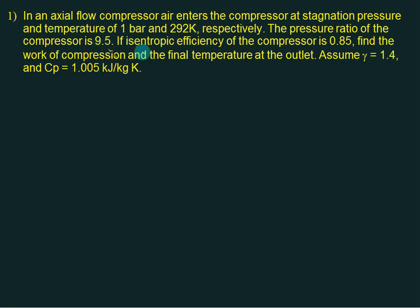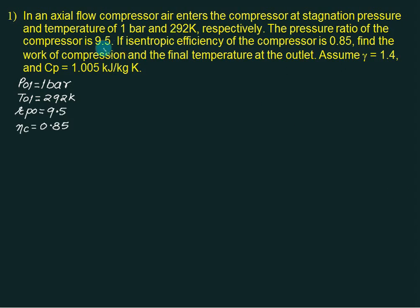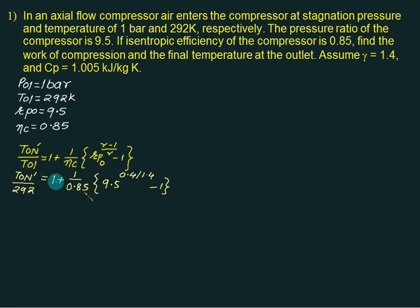Example 1: Air enters an axial flow compressor at a stagnation pressure of 1 bar and stagnation temperature of 292 K. The overall pressure ratio is 9.5, the isentropic efficiency of the compressor is 0.85, and γ = 1.4, cp = 1.005 kJ/kg·K. We use the relation T0n dash = T01 × [1 + (1/ηc) × (rp^((γ−1)/γ) − 1)], substituting T01 = 292, ηc = 0.85, rp = 9.5, and (γ−1)/γ = 0.4/1.4.